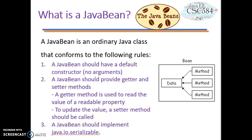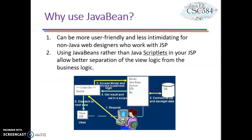Implementing java.io.Serializable allows you to store and restore the state of the Java Bean you are working on. Now that you are familiar with the basics of Java Beans, let's learn about the properties of a Java Bean. But first, let's look at why we use Java Beans — probably the most talked about benefit is that connecting Java Beans with JSP can be more user-friendly and less intimidating for non-Java web designers.